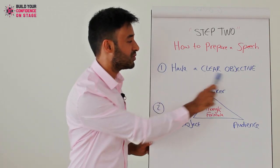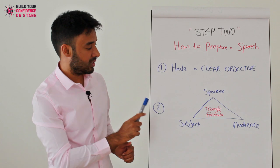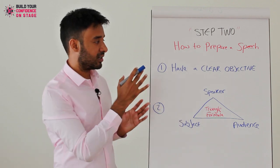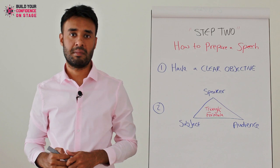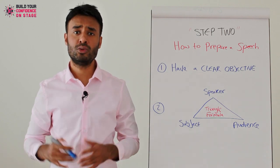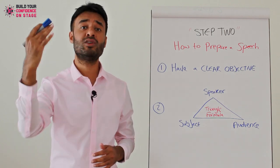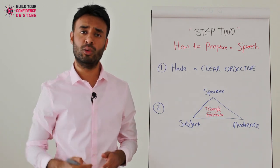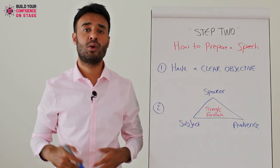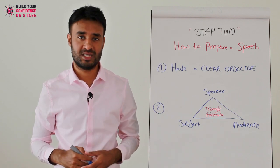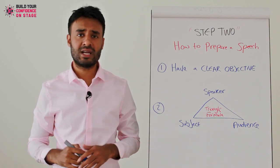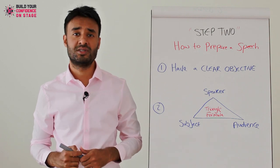One is knowing how to have a clear objective, and secondly, what I call the triangle formula. So if you start off with a clear objective, what do I actually mean by that? When you're preparing a speech, I want you to know exactly by the end of your speech what is the end goal — what do you want the audience to really take away, to really learn from your message. It could be about any subject, anything, but there are two vitally important things you want the audience to take away.